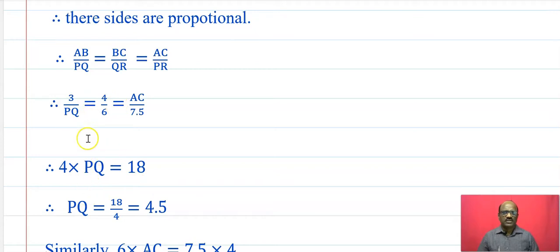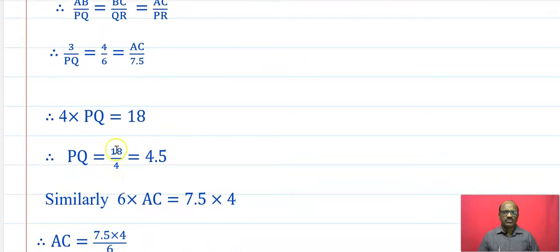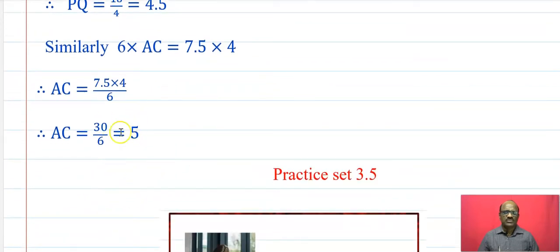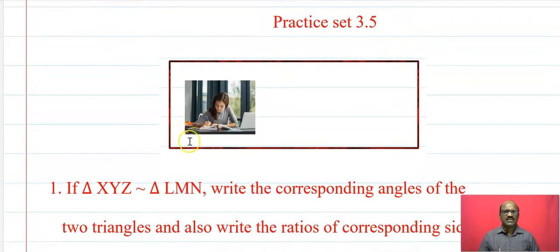Taking the first and second ratio: 4 × PQ = 3 × 6 = 18, therefore PQ = 18 upon 4 = 4.5. Similarly, using the second and third ratio: 7.5 × 4 = 6 × AC, therefore AC = 7.5 × 4 upon 6 = 30 upon 6 = 5. So AC equals 5 and PQ equals 4.5.